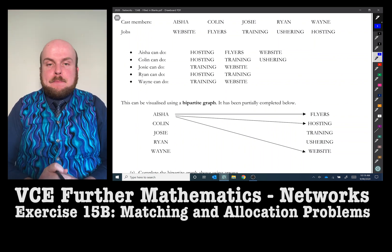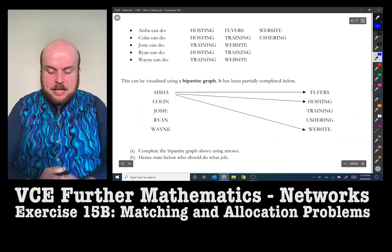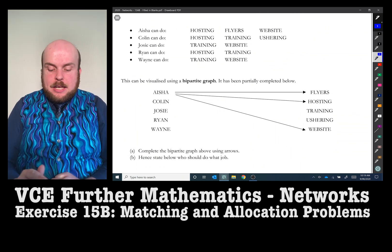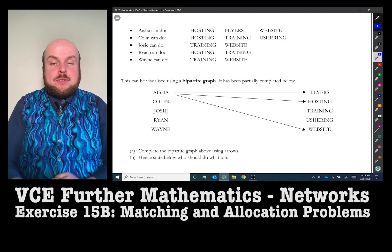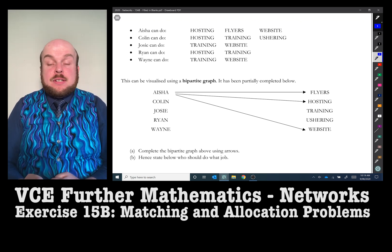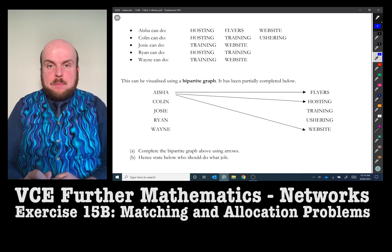We need to complete the bipartite graph using arrows and state who should do what job. You'll see that Aisha has three arrows and that corresponds to the three jobs she can do. We are going to do the same for all of the other performers.